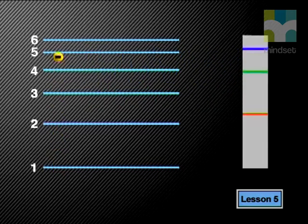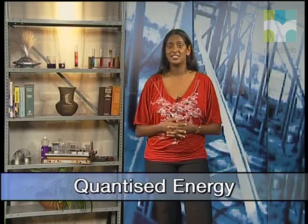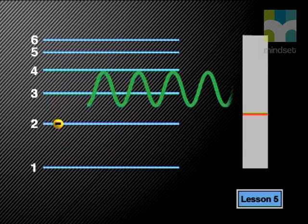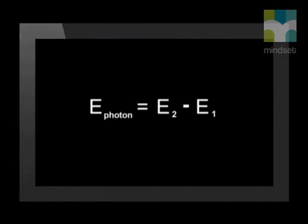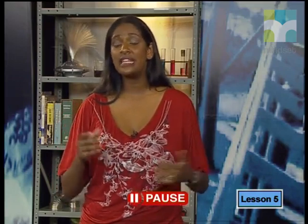The energy the electron loses or gains is always in specific values unique to each element because energy is quantized — it comes in packets called quanta. When an excited electron drops to a lower energy level, the energy is released as a photon of light. The energy of the emitted photon equals the energy difference between the two energy levels. Since each element has a unique set of energy levels, the frequencies of light emitted are unique to each element and can be used to identify it.